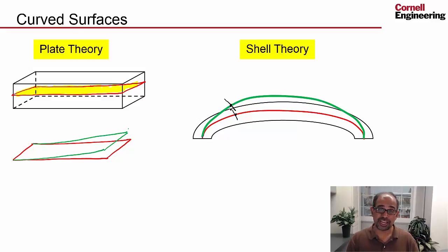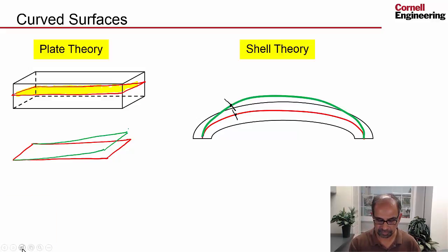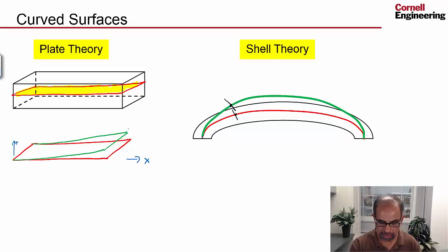And the complication is that now your coordinate system has to be curvilinear. Here, we said this was x and this was z and this was y. Over here, x is along this line, this red line over here. And z is the direction perpendicular to that midline. So that's z.